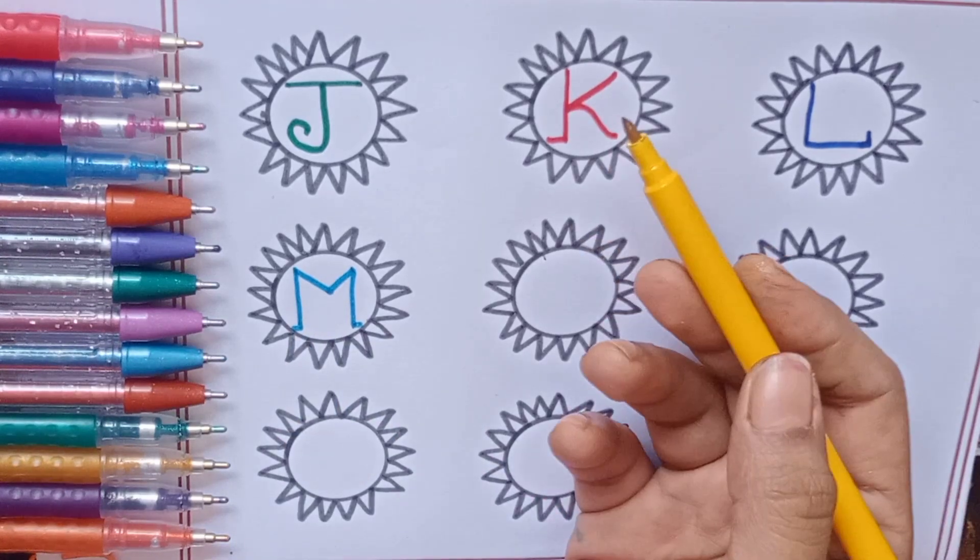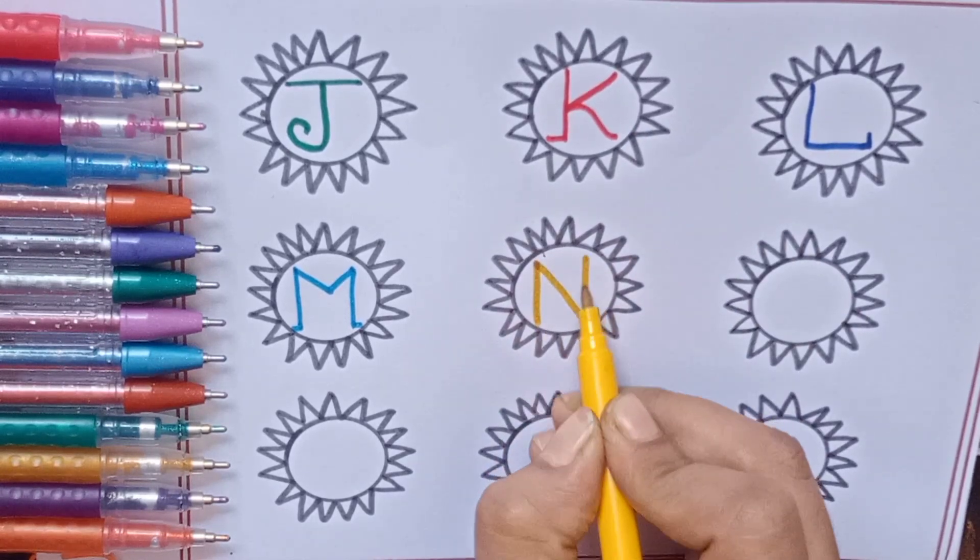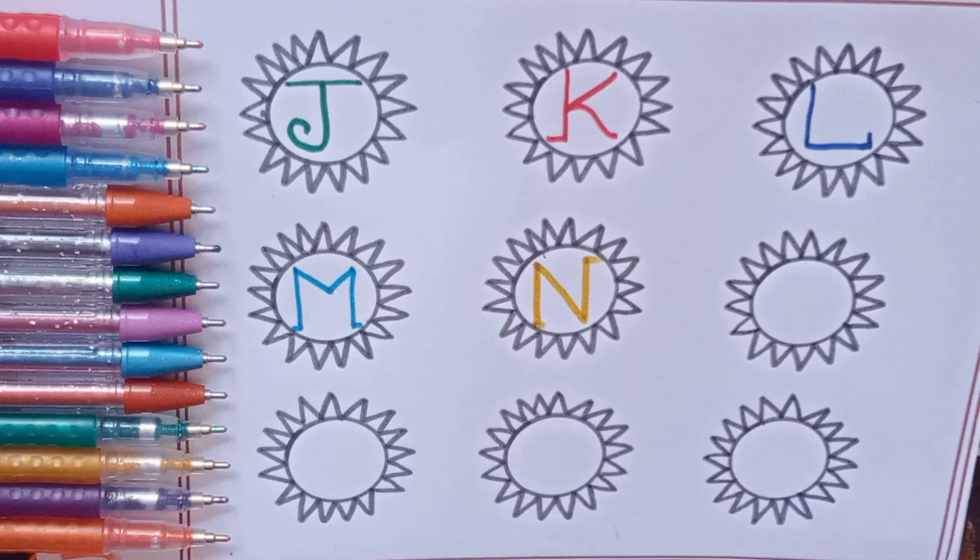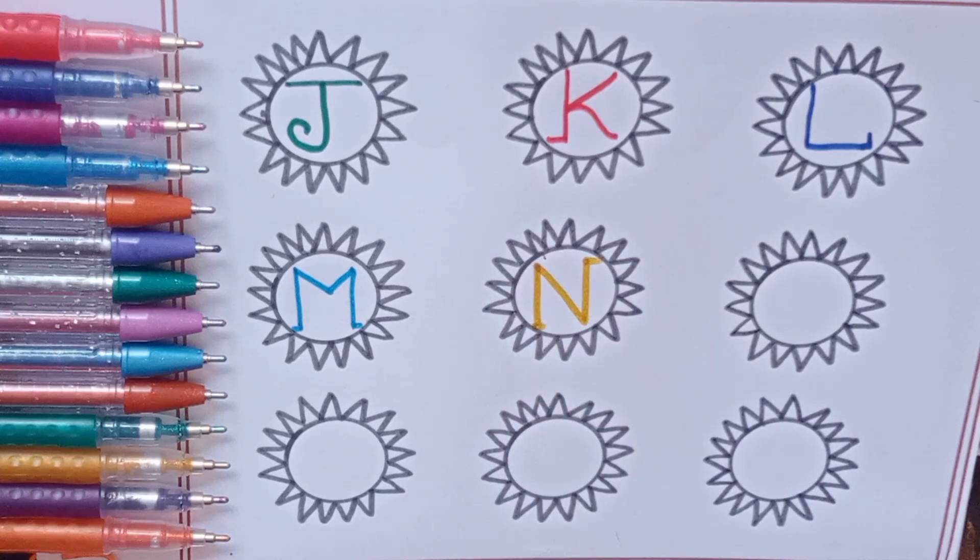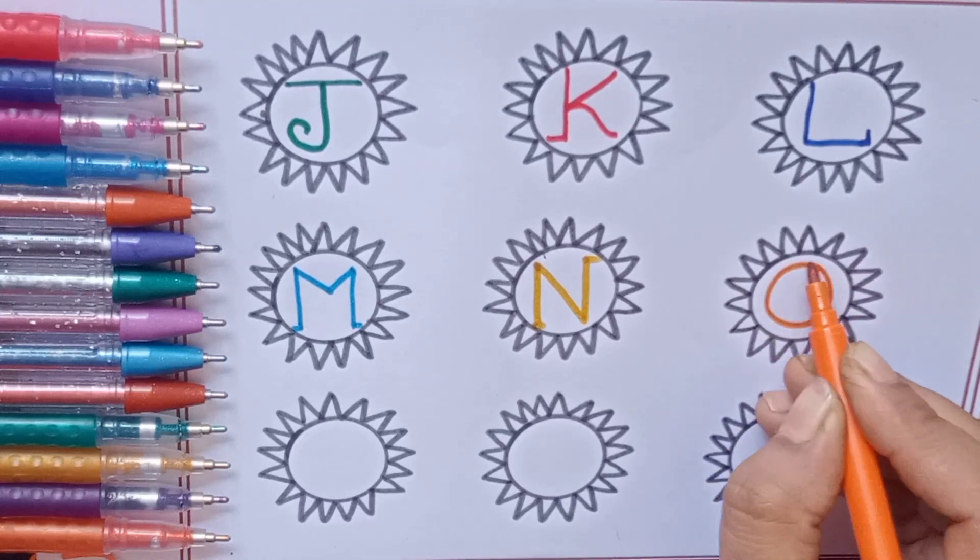Yellow color, N, N for nail. Orange color, O, O for oval.